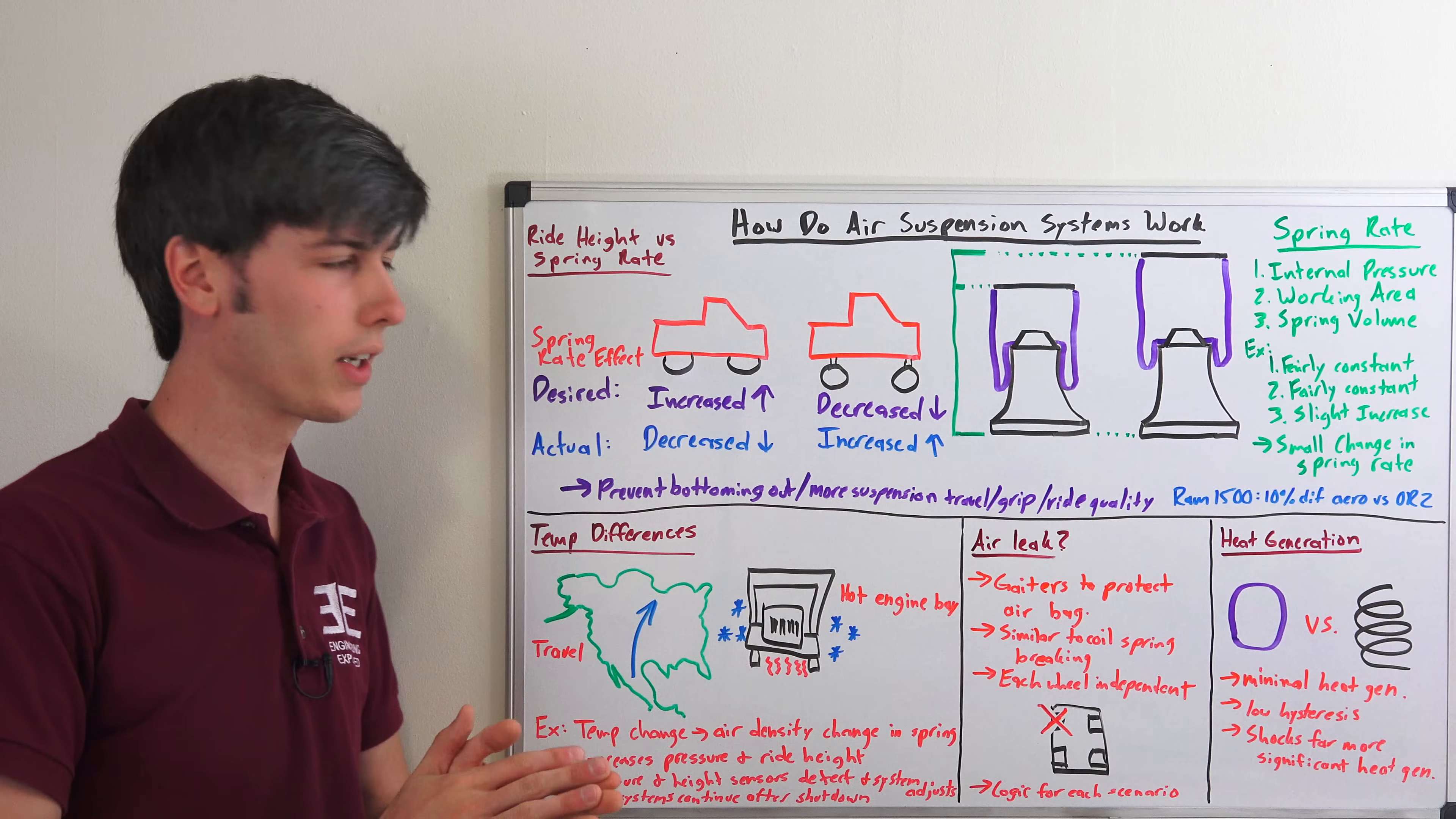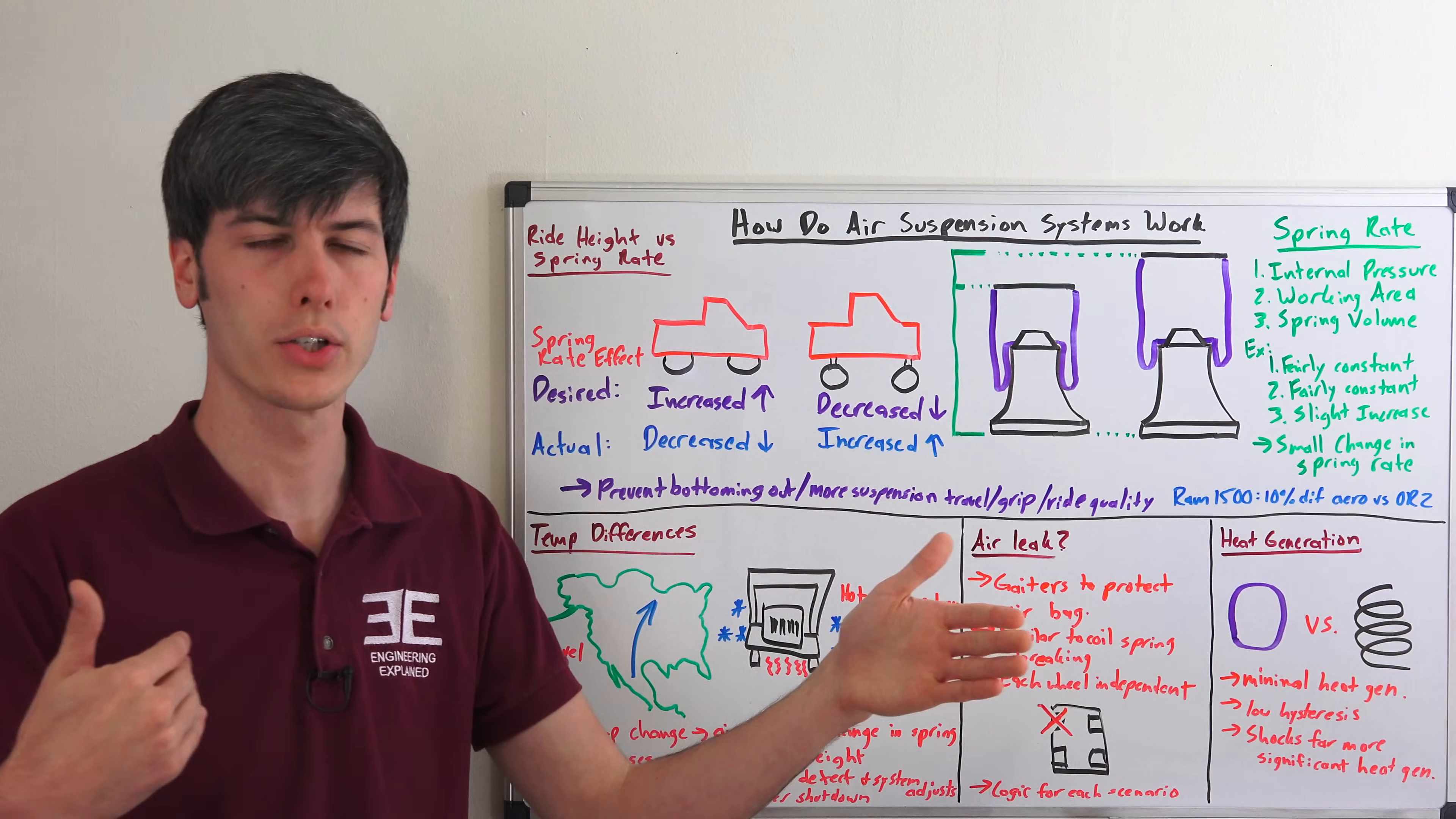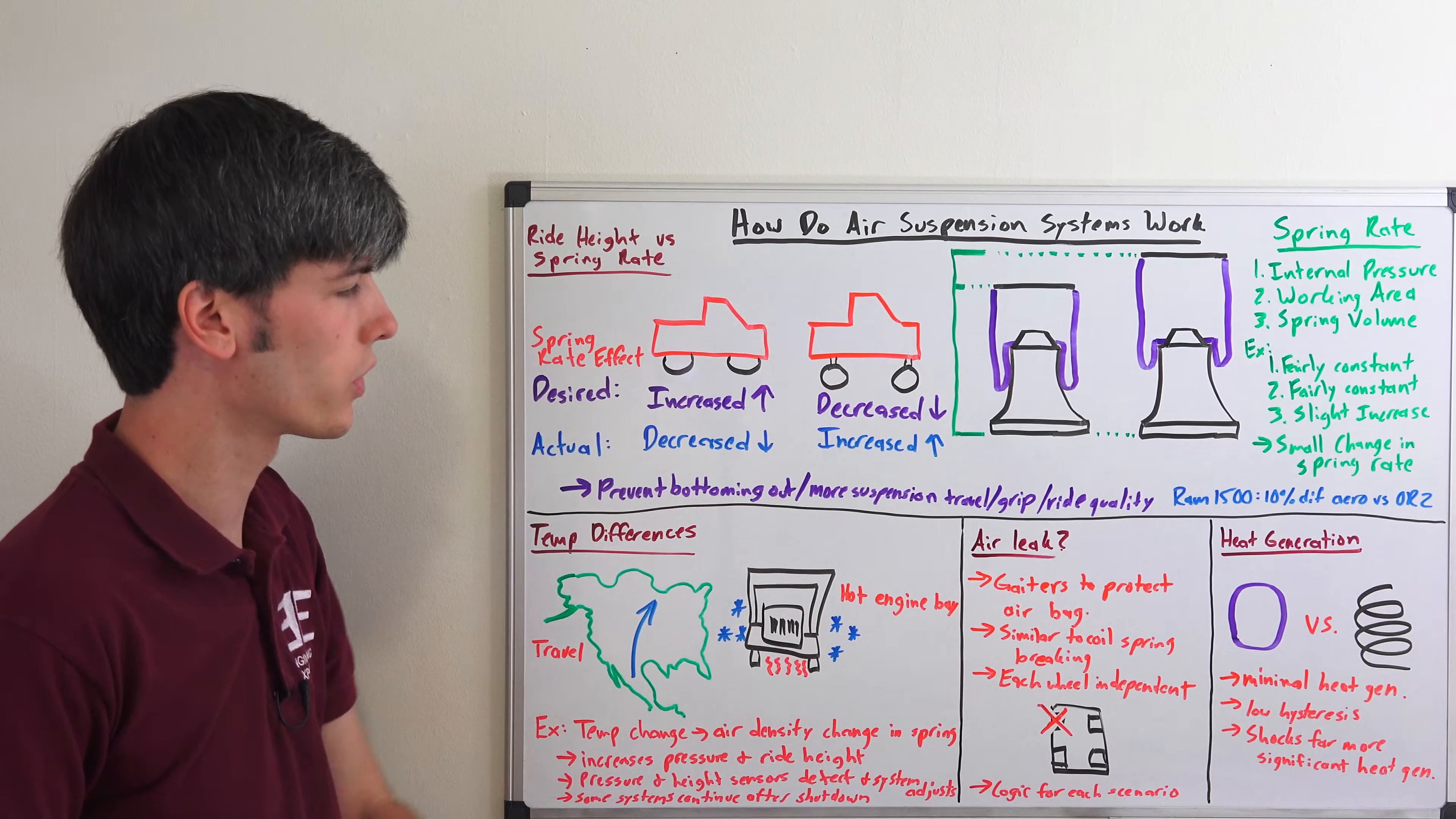You can imagine these are really hot and then you shut the system down and then you leave and you're in a very cold environment. Well, your vehicle is going to lower significantly depending on how cold it is outside and how hot those air springs are. So some systems will remain active for a short duration after the vehicle has been turned off in order to compensate for that temperature difference.